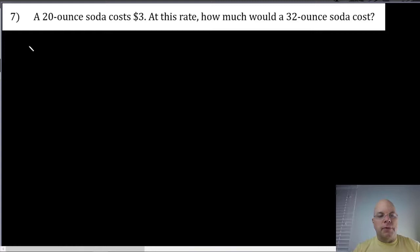There are two ways to set up this proportion without making a mistake. Some students like a ratio table, so I'm comparing ounces to dollars. 20 ounces costs three dollars.